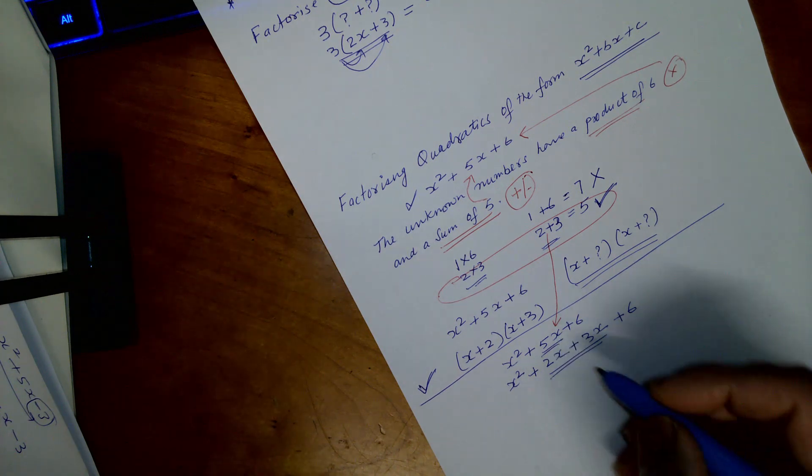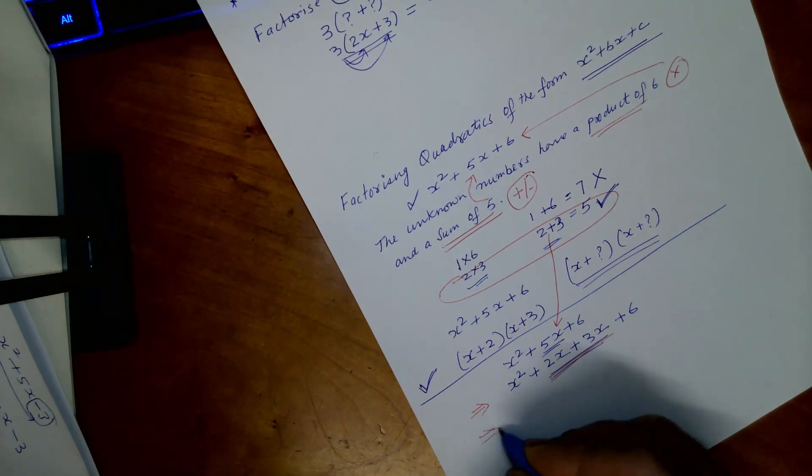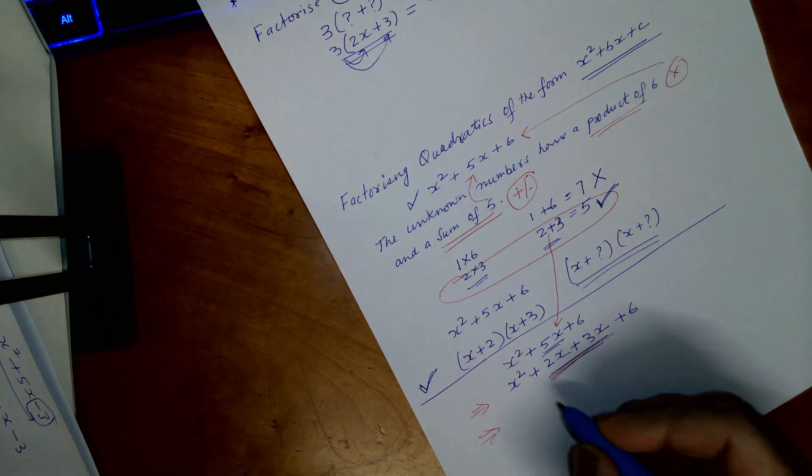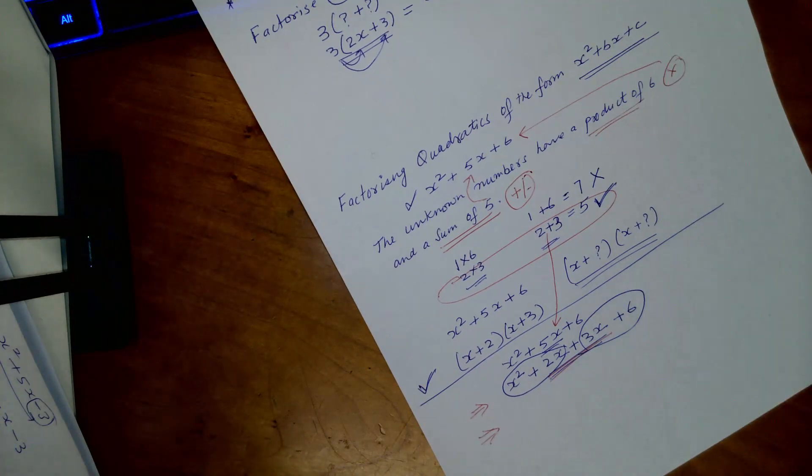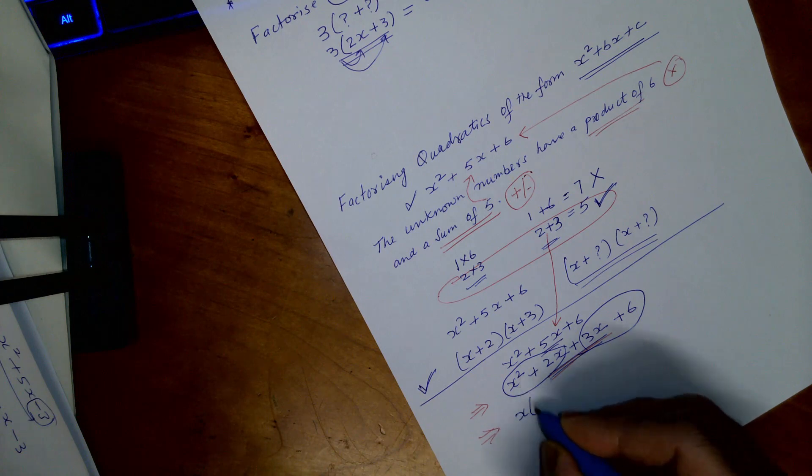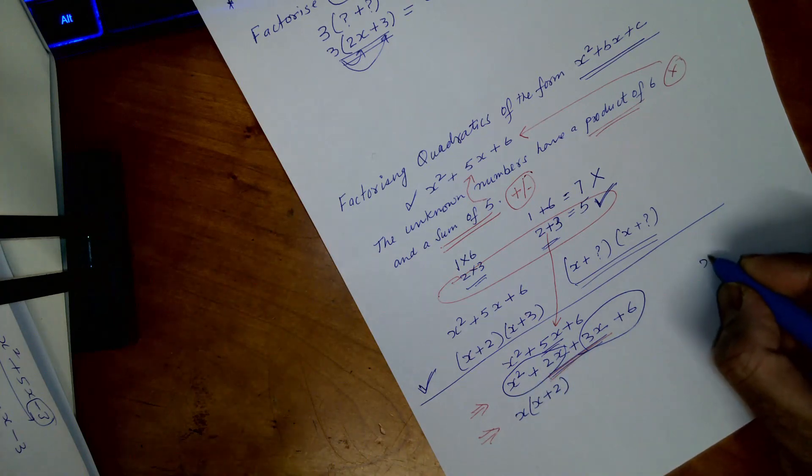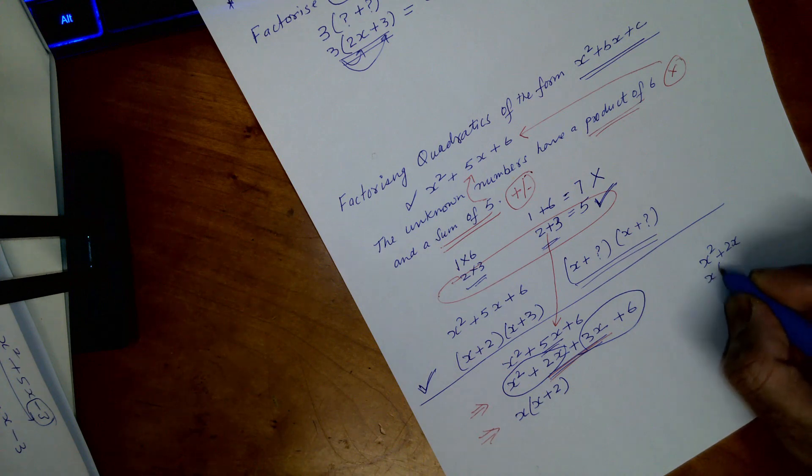Now we got that, and what we need to do is to further simplify this. In here, if we take this and this separately, we take x out. What we have here is x square plus 2x. It also can be written as x times x plus 2.